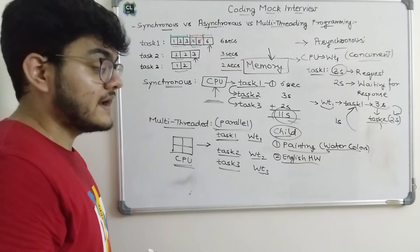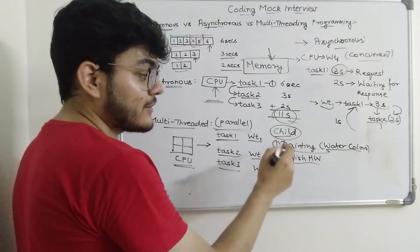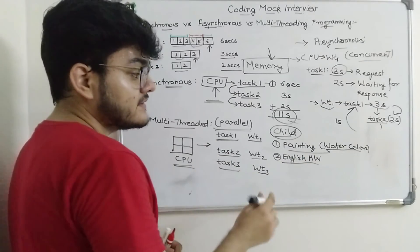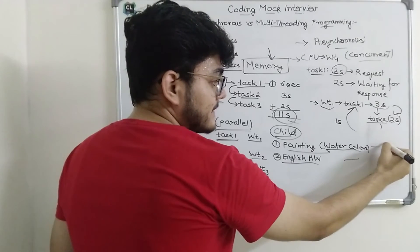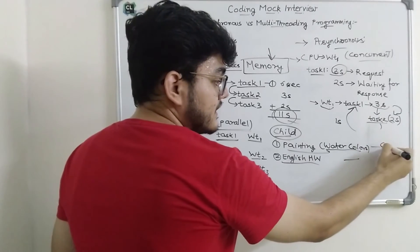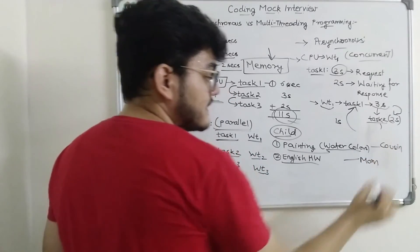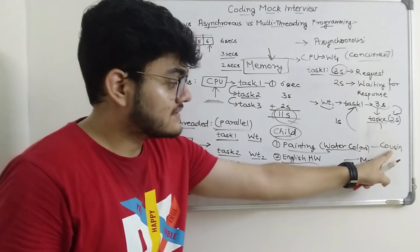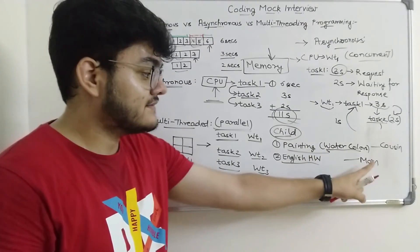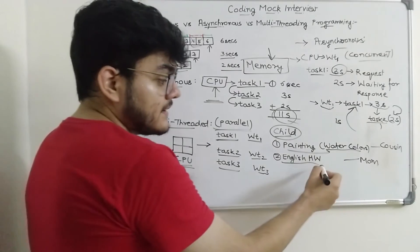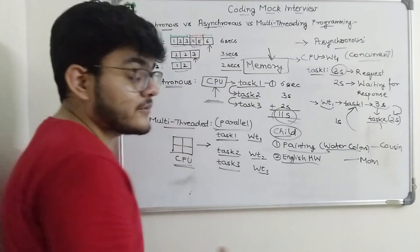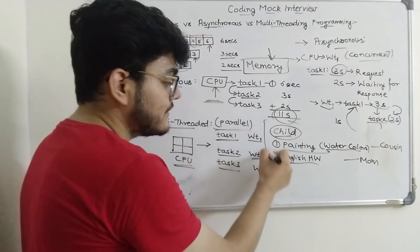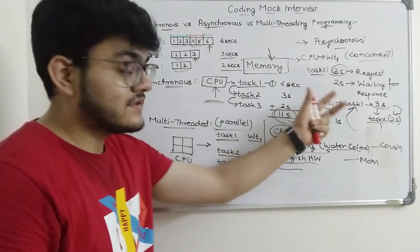There is one more strategy the child can use: he tells two other people — his cousin and his mom — to do the tasks for him. He assigns the drawing work to his cousin and the English homework to his mom. Both work in parallel simultaneously. This is a threaded environment. This is a good analogy to understand the differences between synchronous, asynchronous, and multi-threaded programming.